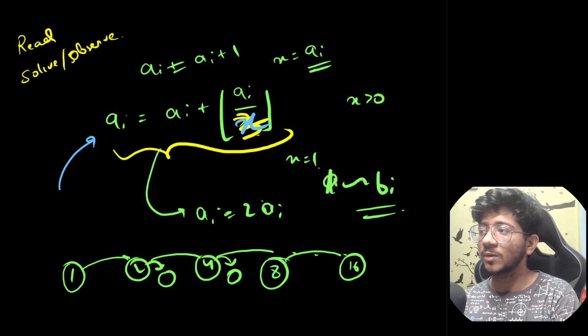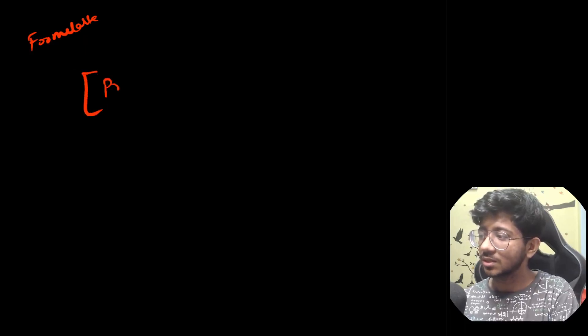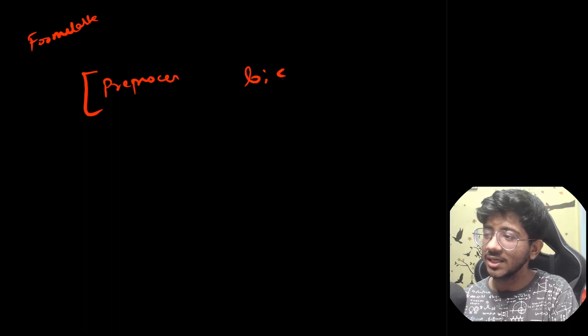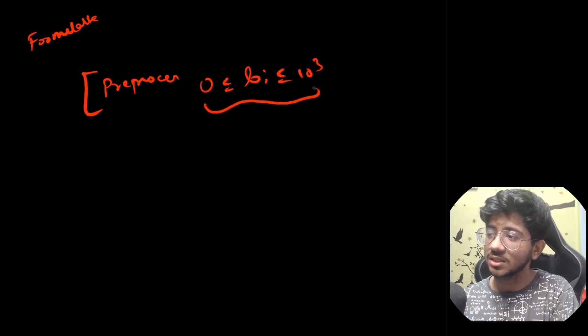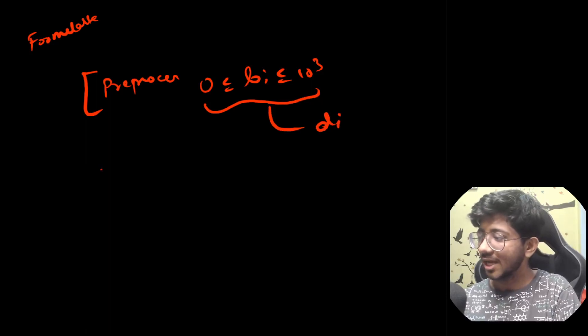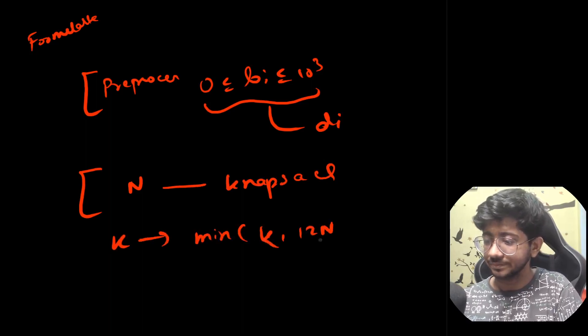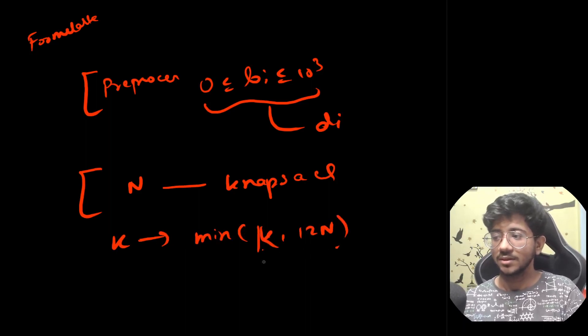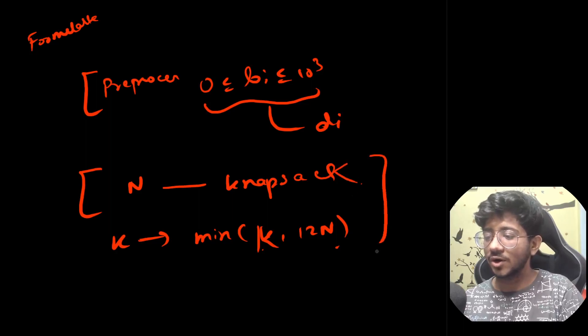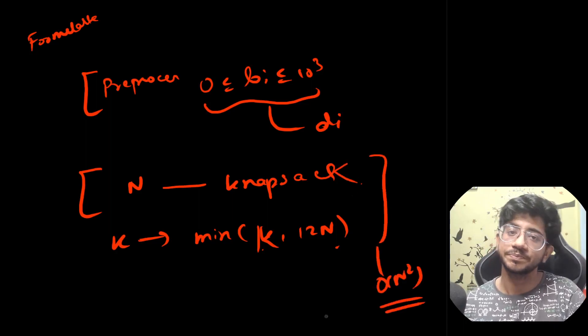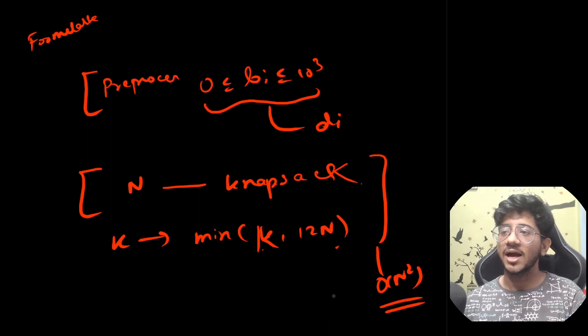To summarize the solution: pre-process for every b[i] in range 0 to 10^3 the minimum cost d[i] from 1 — this is independent of test cases. Then for every test case, take k = min(k, 12 * n) and solve the standard knapsack using DP. This gives an O(n^2) solution, which is sufficient for this problem.